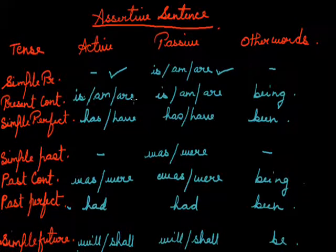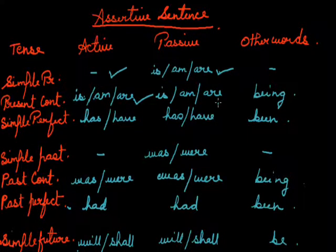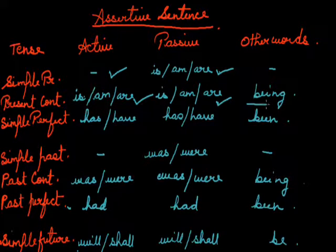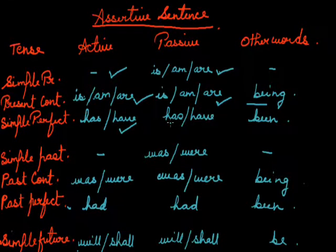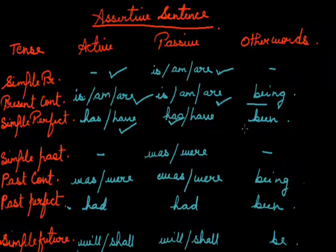Present continuous: 'she is drinking tea' and the passive is 'tea is being drunk by her.' Present perfect: 'she has drunk tea' and the passive will be 'tea has been drunk by her.'